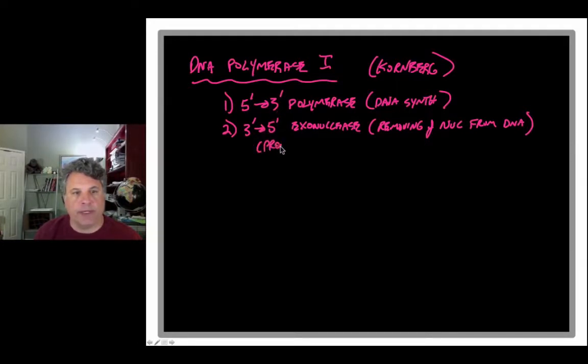And this we will find is a proofreading activity that removes nucleotides when they are mismatched in terms of their Watson-Crick base pairing ability. So if a C is inserted, let's say, instead of a T in a growing chain, the polymerase backs up, so we're synthesizing along here, 5' to 3'. If a wrong base is inserted, let's say, this blue base is the wrong base, the 5' to 3' polymerase activity ceases and a 3' to 5' exonuclease activity removes the wrong nucleotide from the chain. So it chops that off. So that is a proofreading activity of the polymerase itself that removes misincorporated nucleotides. Wrong nucleotides are removed by this activity.